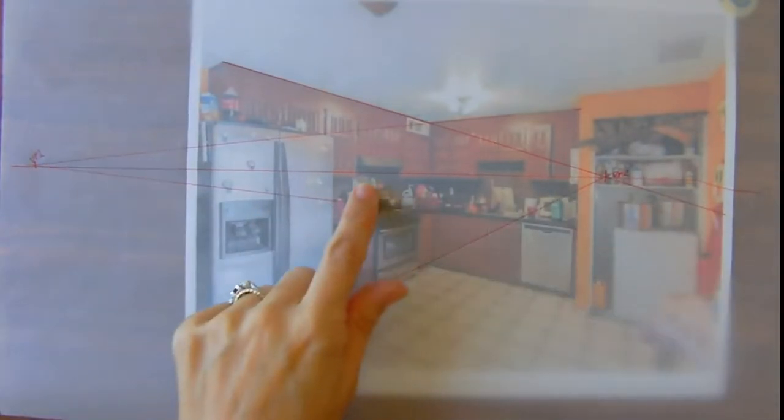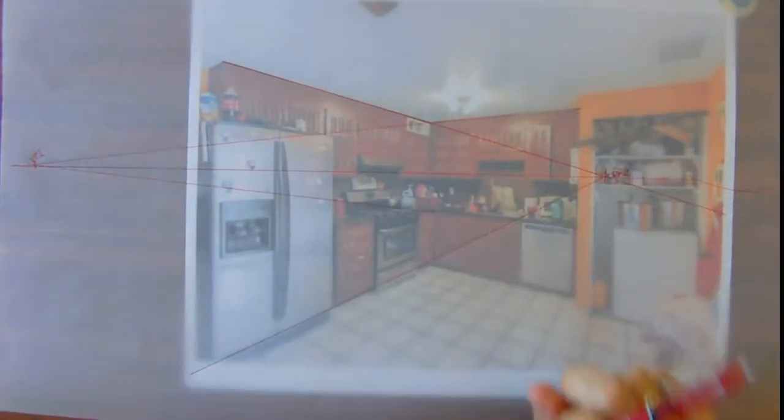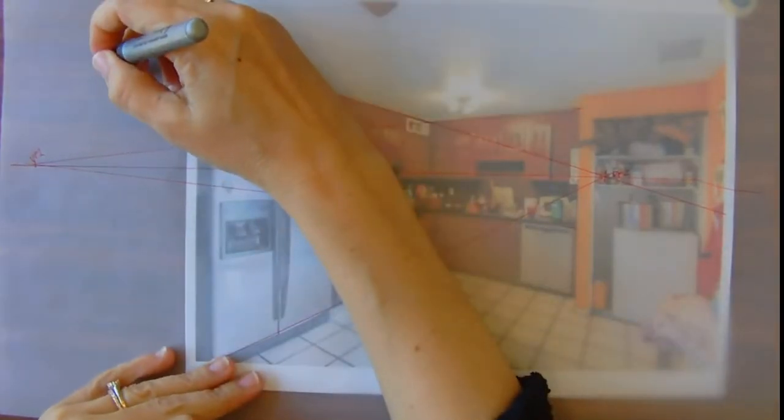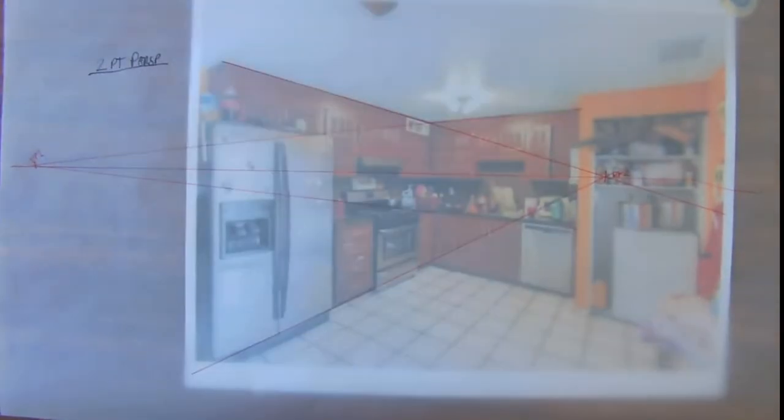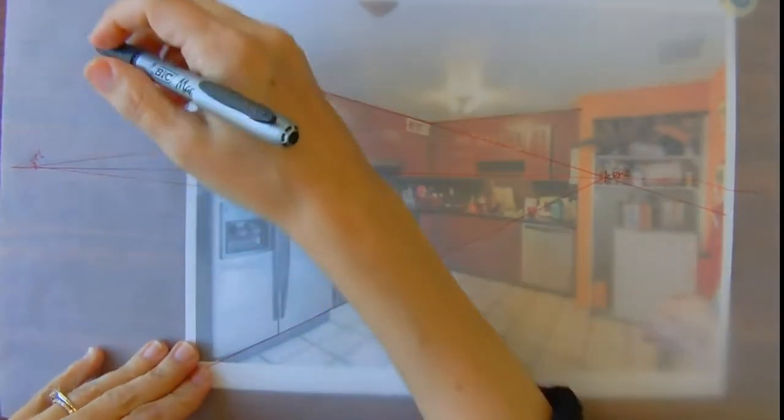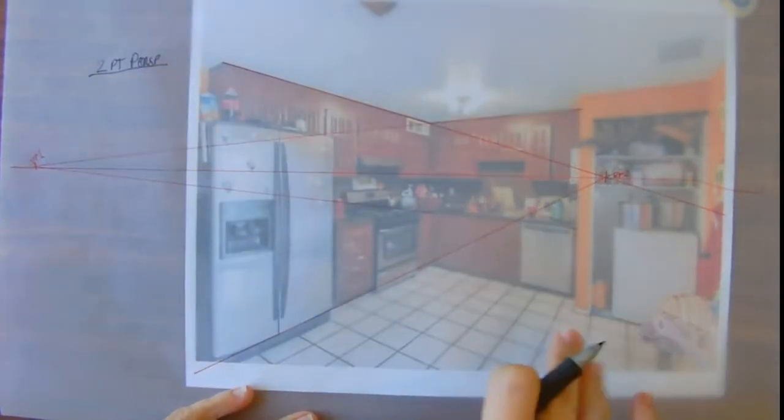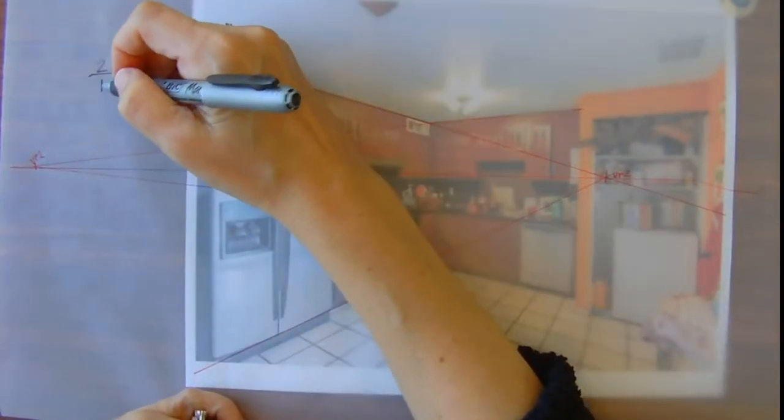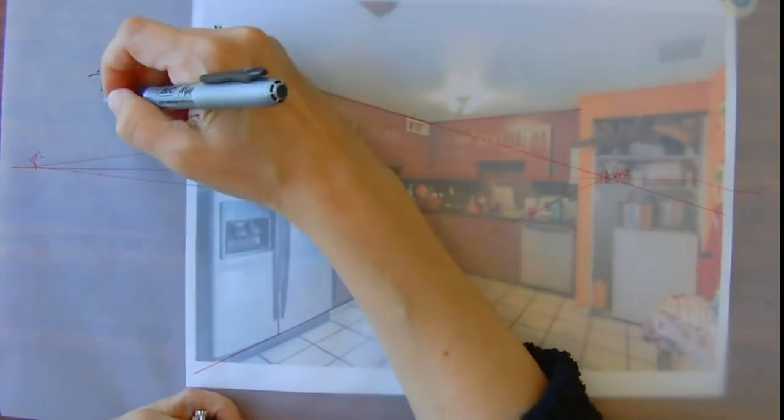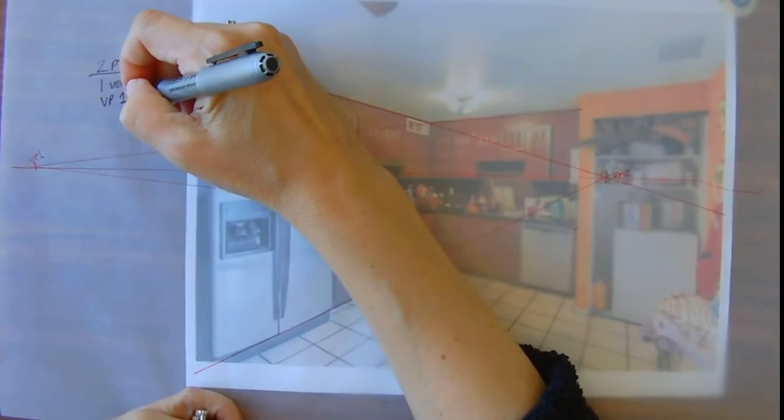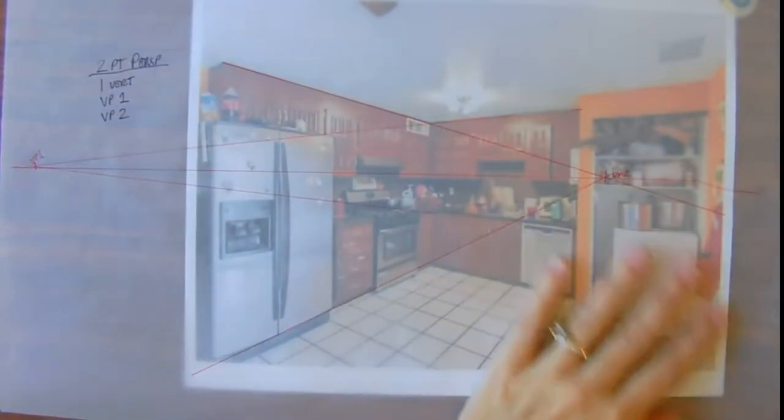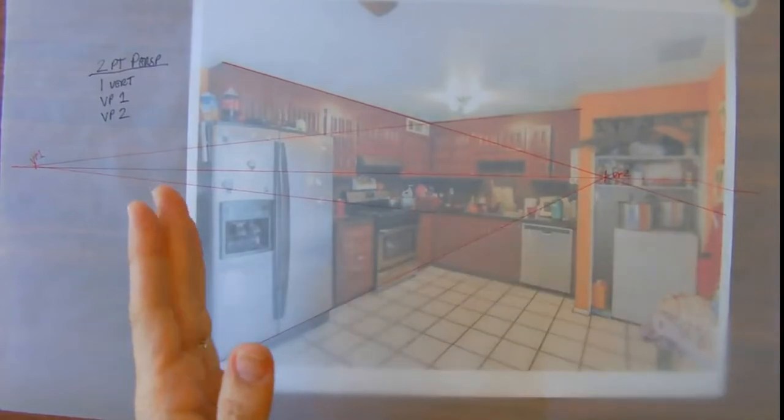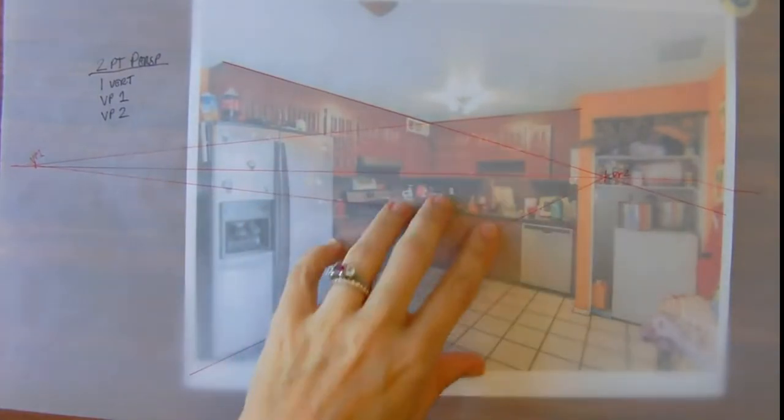That's it, and the horizon line is just if you connect the two. Our two vanishing points and this is our horizon line. It's so easy. In two-point perspective, there's only three types of lines that we're ever going to draw: lines that are perfectly vertical, lines that go to vanishing point one, and lines that go to vanishing point two. That's it.